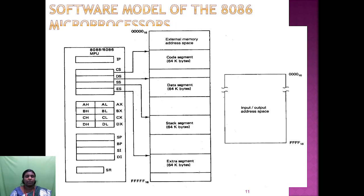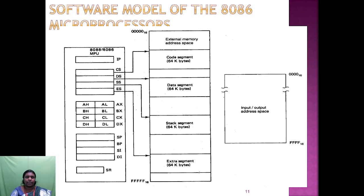The software model also includes the general purpose registers AX, BX, CX, and DX, as well as stack pointer, base pointer, source index, and destination index. The last part shows the segment registers — CS, DS, SS, and ES — with memory allocations for the four segment registers.